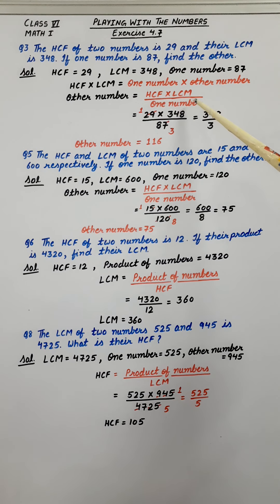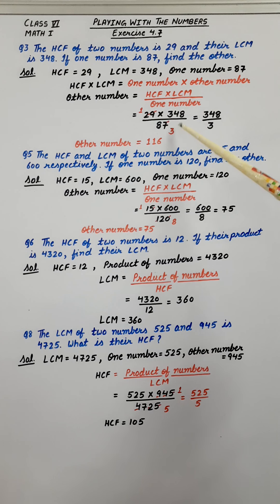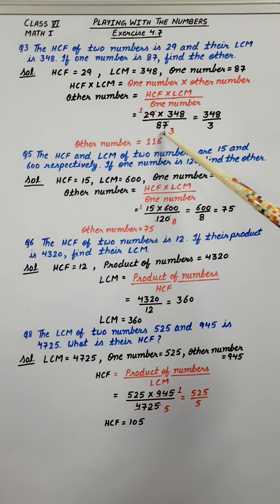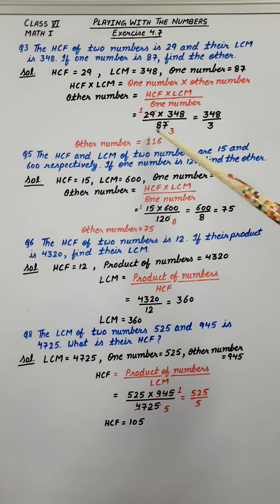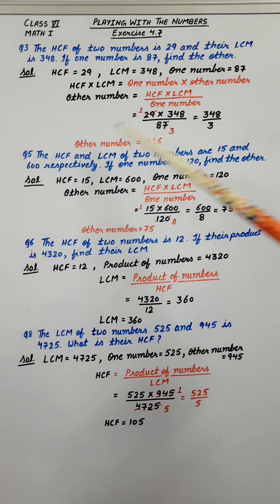Let's use the formula here. HCF is 29 multiplied by LCM is 348, divided by one number which is 87. Now let's reduce these numbers. 29 and 87 are both divisible by 29 — 29 ones and 29 threes. So the result is 348 upon 3. They are both divisible by 3, so the final answer is 116. The other number is 116.